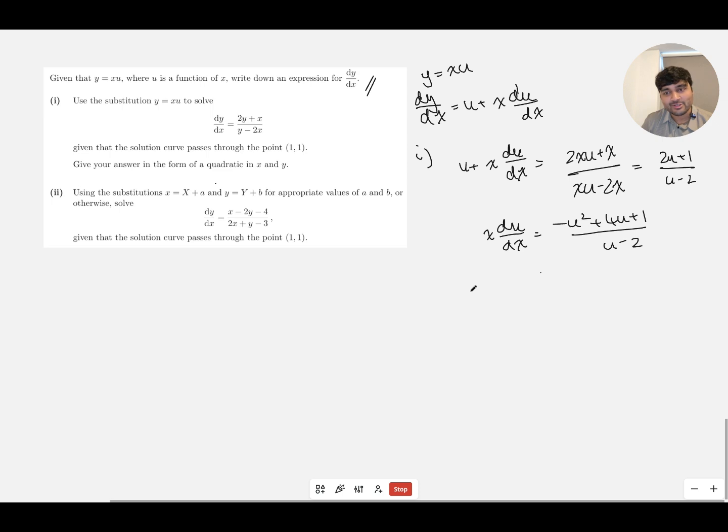Hopefully the integration isn't too bad. So we get (u - 2)/(-u² + 4u + 1) du equals (1/x) dx from rearranging. And now I can just integrate, integrate, and put a plus c. In fact, let me bring this over here. I'm just going to try and keep everything on the screen if I can.